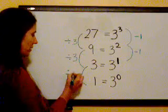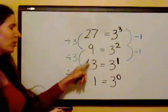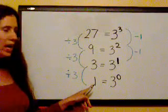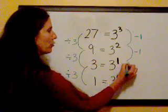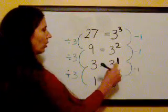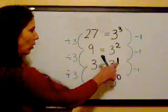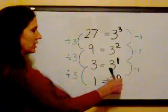because I'm going down by a factor of 3. If I do this again, and I divide by 3, 3 divided by 3 is 1. And I also go down by negative 1, so 1 minus 1 is 0.